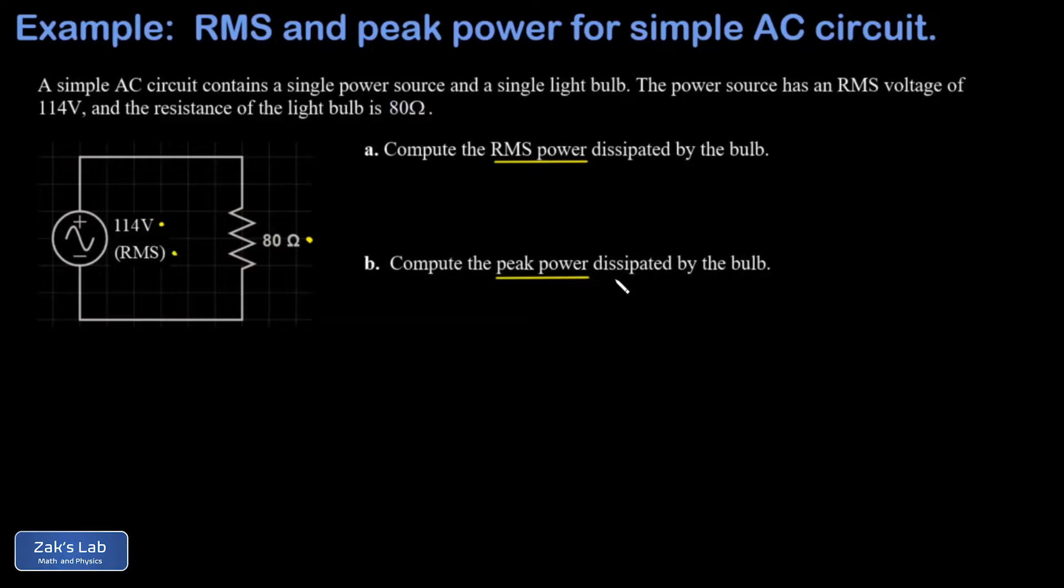In this video, I'm just going to quote the formulas as I need them. In part A, I'm getting the RMS power dissipated by this bulb. This is just given by our old formula for the power dissipated by a resistor. These formulas work for the RMS power as well. That's just V squared, or VRMS squared, over R.